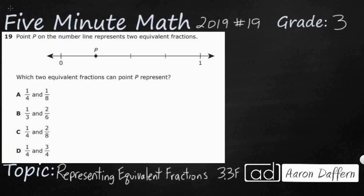So question 19 states: point P on the number line represents two equivalent fractions. Now that equivalent is going to be big for us because that tells us what we're looking for. Equivalent means equal, so we want two equal fractions.